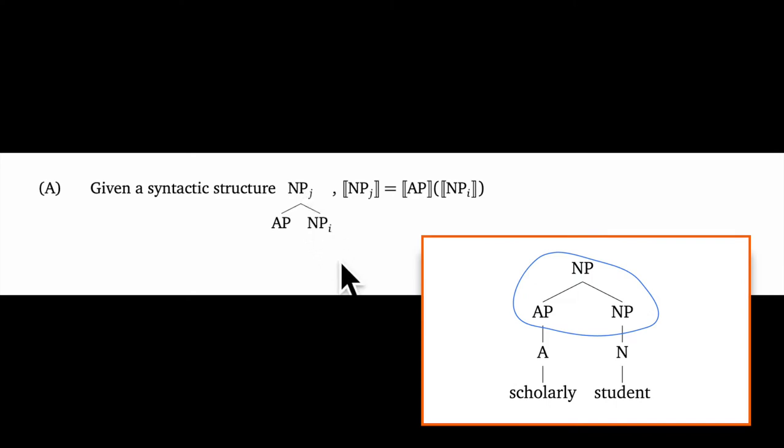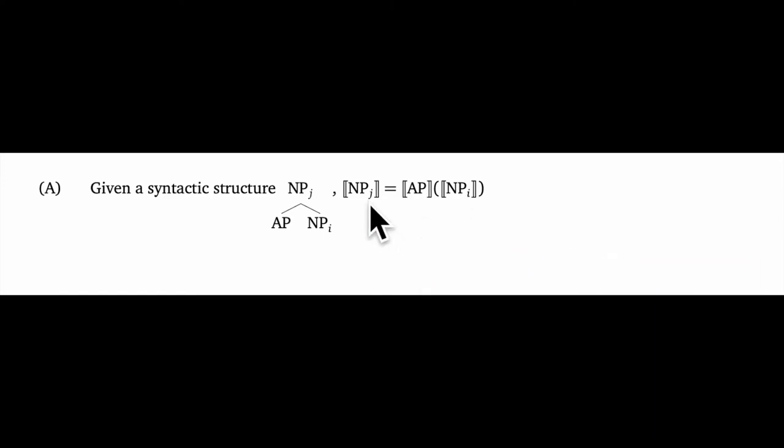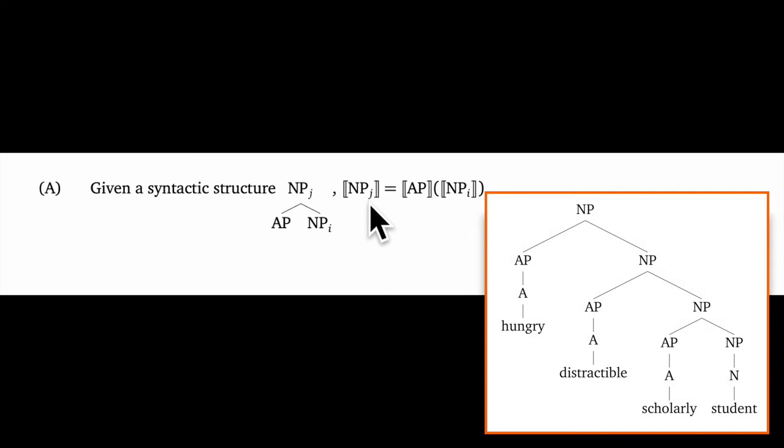In the rule, we have these annotations I and J on the NPs to distinguish them. The lower NP, subscript I, is the argument. And we produce NP sub J. And this is actually key to the recursive adjectival modification we can get in the syntax. And you can see that our semantics is prepared for such stacking of modifiers as well.